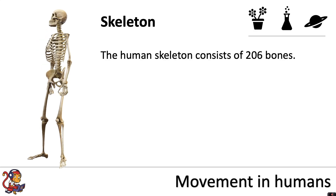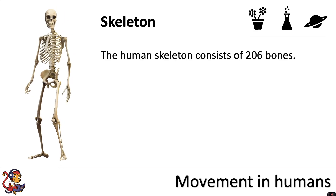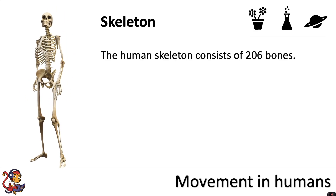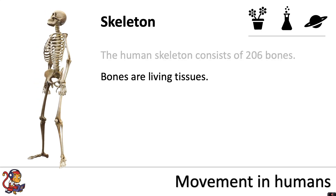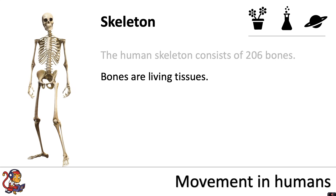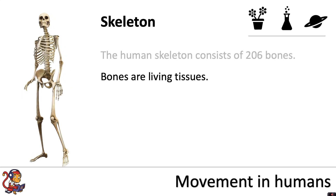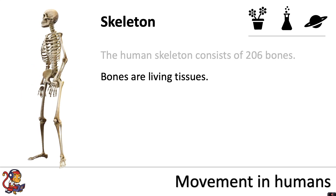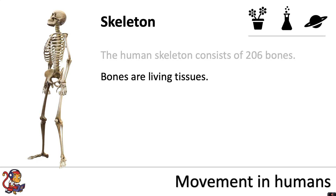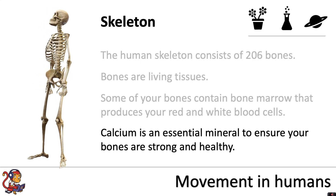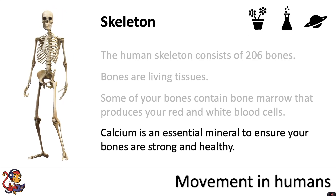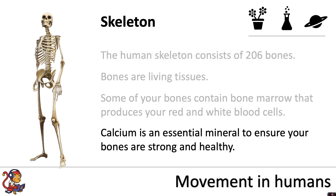Starting off with the skeleton. The human skeleton consists of 206 bones. Bones are living tissues — tissues are groups of similar cells working together to perform a particular function. Some of your bones contain bone marrow that produces your red and white blood cells. Calcium is an essential mineral to ensure your bones are strong and healthy.